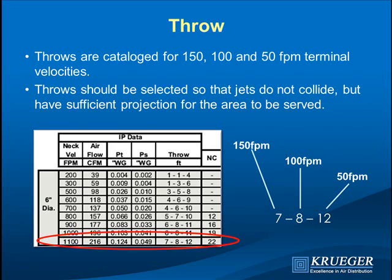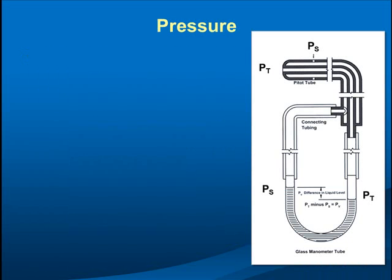With VAV systems in the interior zone, VAV boxes will typically run at about 20% of their rated airflow. The pitot tube measures pressure: total pressure is measured through the hole in the end of the pitot tube, and static pressure is measured through ports on the side, fed into an inclined manometer. The difference between the two gives you the velocity pressure, so you can calculate what's going on.